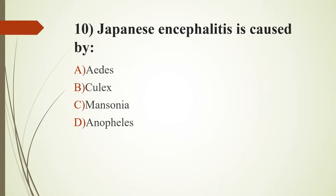Tenth question: Japanese encephalitis is caused by which mosquito? Option A, Aedes. Option B, Culex. Option C, Mansonia. Option D, Anopheles. The answer is Option B, Culex mosquito. Culex mosquito is also associated with transmission of filariasis and vesicular fever. Aedes aegypti transmits dengue fever, yellow fever, chikungunya, and Zika virus. Female Anopheles mosquito transmits malaria. Mansonia transmits lymphatic filariasis.